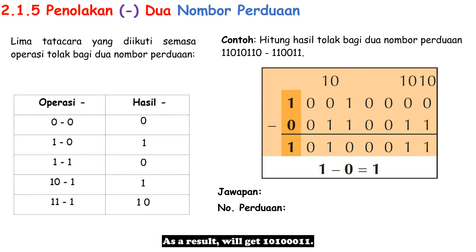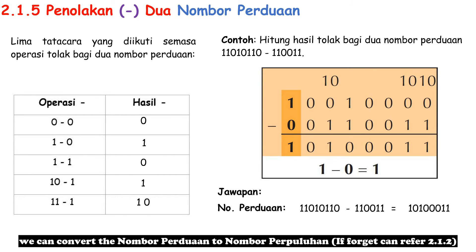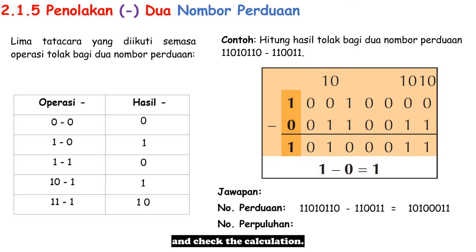As a result, we get 101000011. Same as addition, in order to confirm the answer is correct, we can convert the Nombor Perduaan to Nombor Perpuluhan and check the calculation.